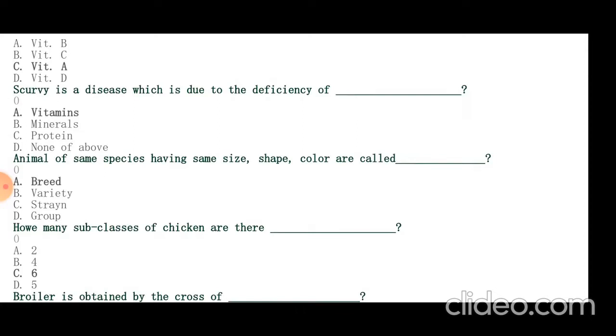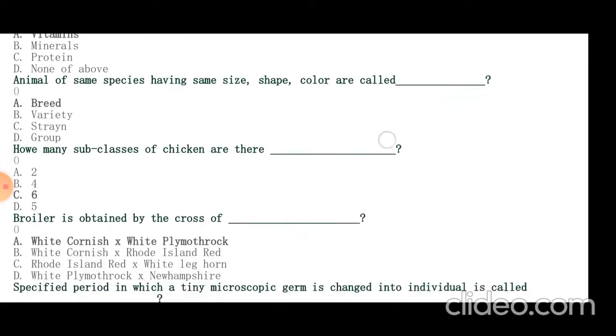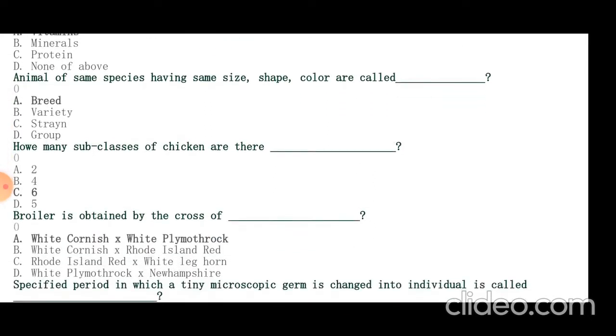Asian breeds have evolved as Brahma, Cochin, Langshan, Aseel. Broiler is obtained by a cross of Cornish and Plymouth Rock. Both are white: white Cornish and white Plymouth Rock. The difference is Cornish and Plymouth, CP. We can remember it as CP - C for Cornish, P for Plymouth Rock.